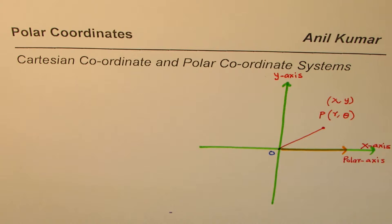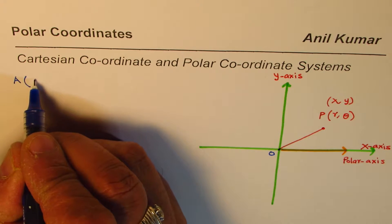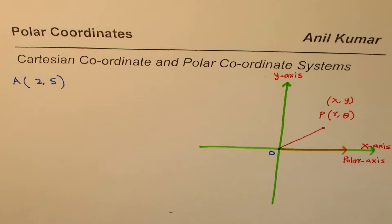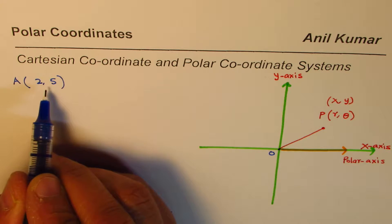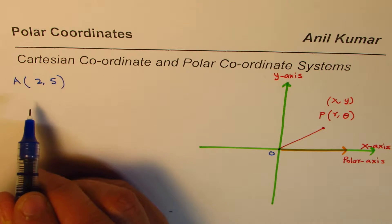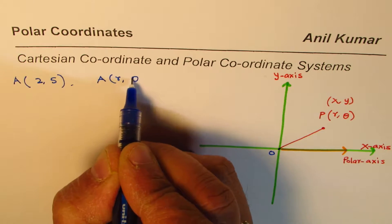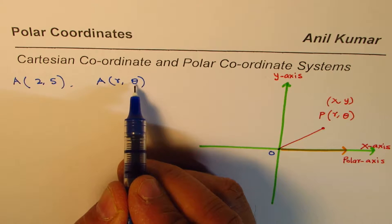Now we will see how we can write any point in both forms. Let's take a point A which is (2, 5). So the x value is 2 and the y value is 5. This point is on the rectangular coordinate system or the Cartesian plane. To write it in the form of r and θ, we need to find the magnitude of this segment and the angle theta.